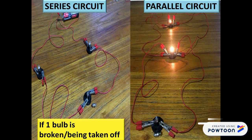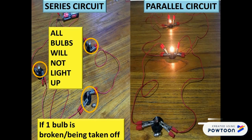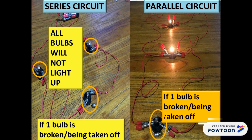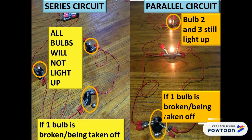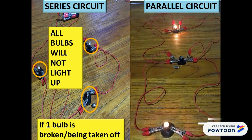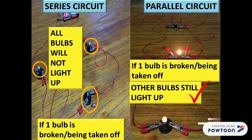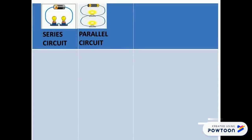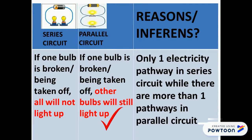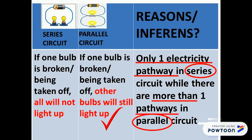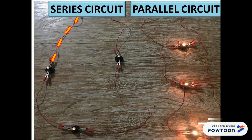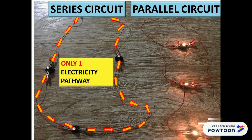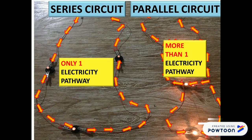The third difference is: if one of the bulbs in a series circuit is broken or being taken off, the other bulbs will be off or will not light up too. While in a parallel circuit, the other bulbs will still light up. As shown in this diagram, a series circuit only has one electricity pathway, while the parallel circuit has more than one electricity pathway.